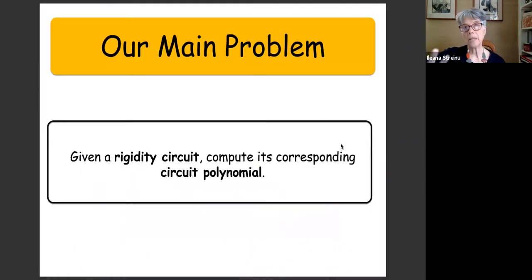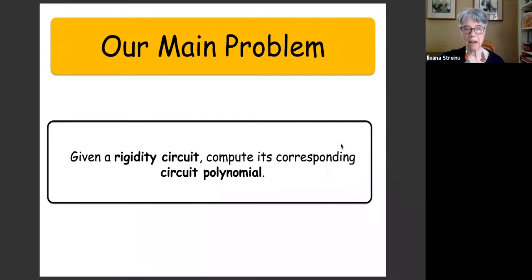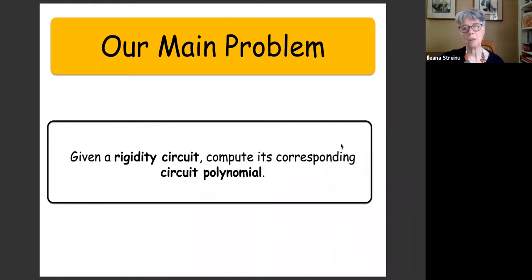The main problem: given a rigidity circuit, we want to compute a polynomial whose variables correspond to the edges of this graph. It is a unique, irreducible polynomial, and you can use it as a template for any problem on that graph — plug in some values and you can solve for any unknown distance. These polynomials also shed light on the structure of the Cayley-Menger ideal, and from a certain point the interesting thing here is the mathematical problem.